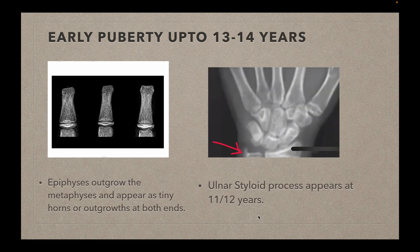The next stage is the early pubertal stage, up to 13 to 14 years. Continuous growth of the epiphysis occurs and it tends to outgrow the metaphysis, appearing as tiny horns or outgrowths on both ends. The styloid process of the ulna appears at 11 years in females and 12 years in males, which can be seen on the x-ray.